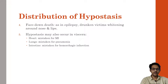If the person has died in a face-down position, mainly in cases of epilepsy and drunkenness, there is whitening present near the nose and lips and reddening present near the face. Hypostasis may also occur in viscera, mainly in the heart, lungs and other organs.